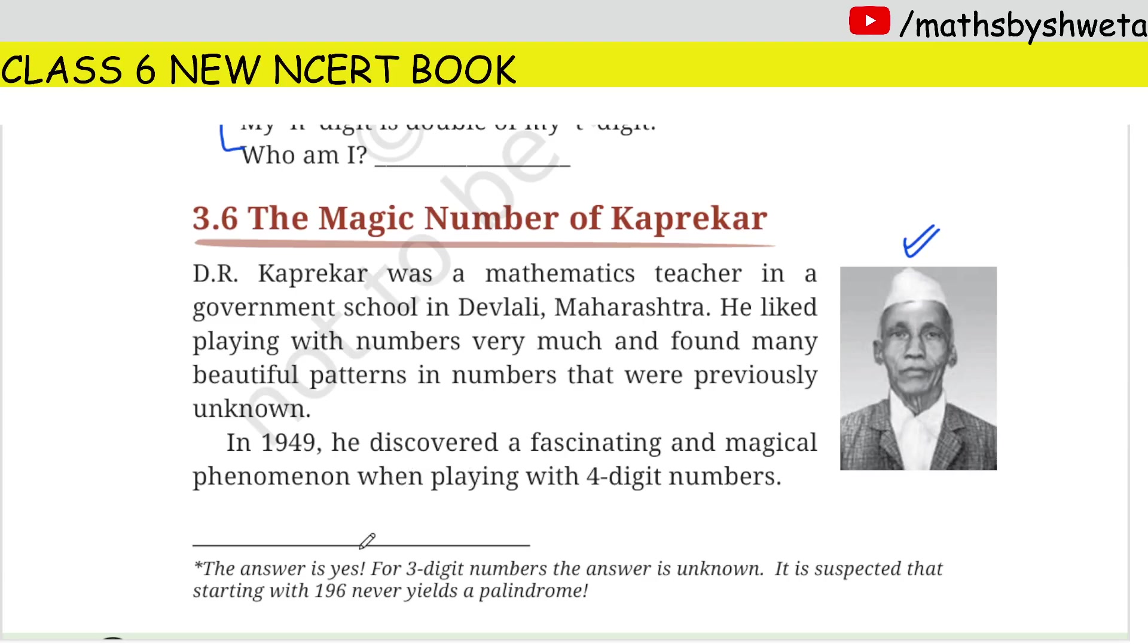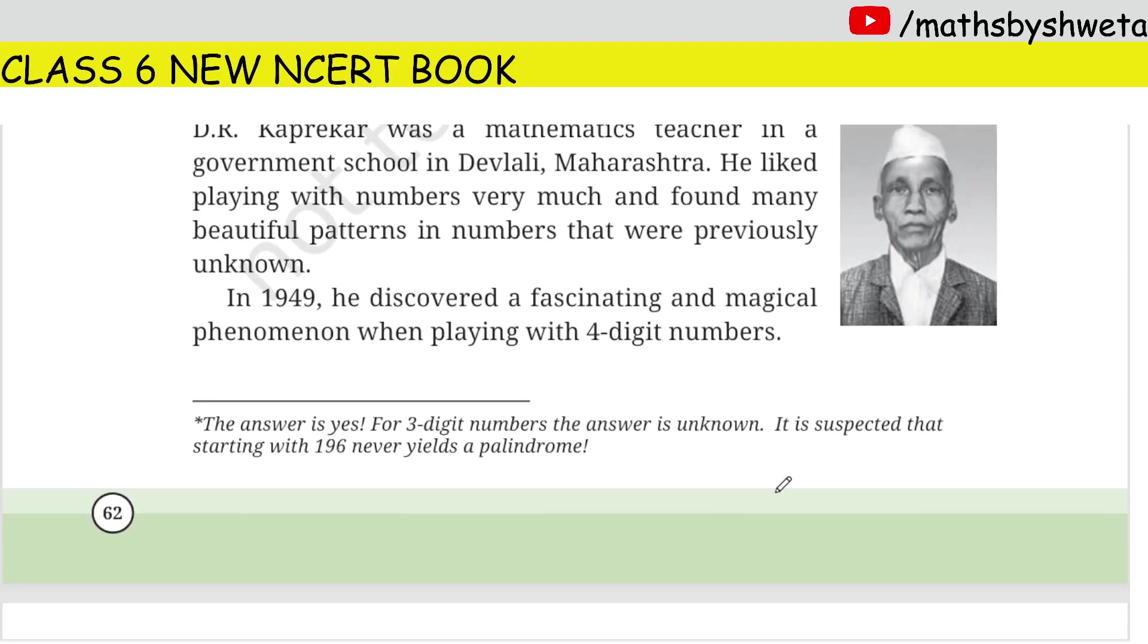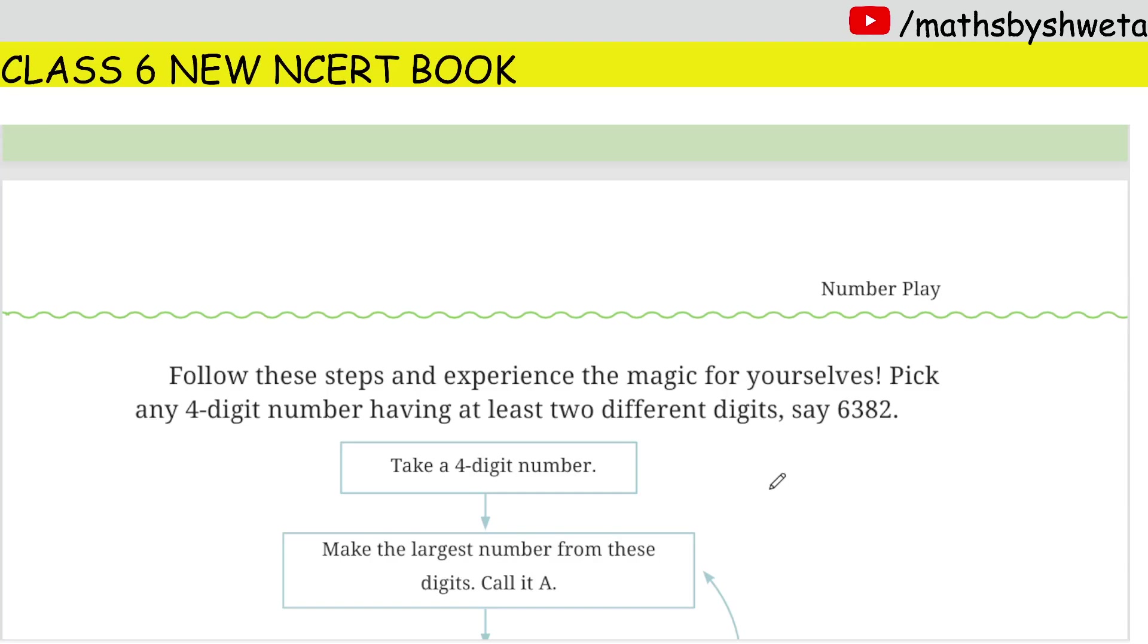In 1949, he discovered a very magical phenomenon with four digits. What is the magical phenomenon? Look here.